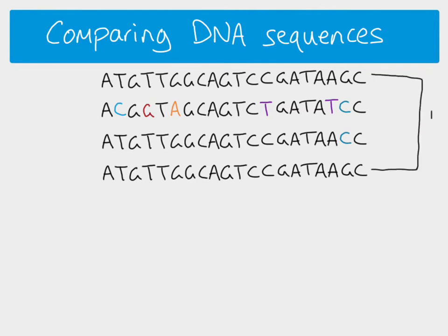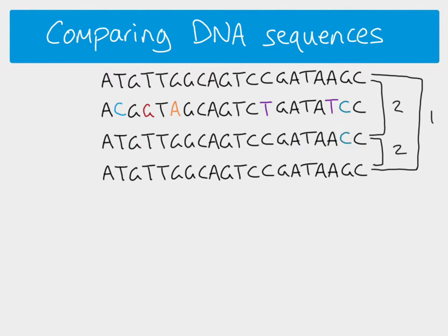From this we can see that two species are the most closely related — they have exactly the same DNA sequence in this section. Remember, that doesn't mean they're the same species, it just means this section from the genome is identical. Two other comparisons are equally similar to one another: those sequences are the same and both differ from the first by only one base. Finally, two sequences from two other species are the least closely related because there are more differences between them.